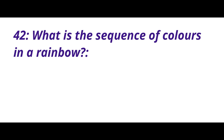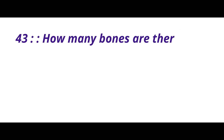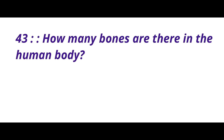What is the sequence of colors in a rainbow? The answer is Red, Orange, Yellow, Green, Blue, Indigo, and Violet. How many bones are there in the human body? The answer is 206 bones.